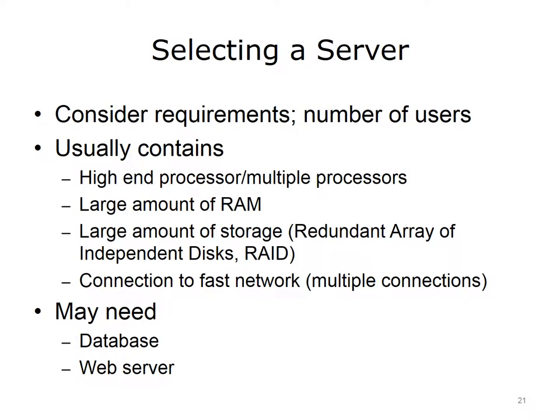When purchasing a server, you again need to consider what you need it to do. Some systems have a maximum number of users, so additional servers may need to be purchased. A server usually contains the highest-end multi-core processor. It also contains a large amount of RAM, which ensures that many programs and processes can be run simultaneously. It also needs a large amount of storage, which is usually implemented as a RAID, or redundant array of independent disks. This is a way to ensure data is not lost in case of disk failure. Also, the server needs connections to a fast network with multiple instances of these connections. Depending on your applications, you may also need to install a database and/or web server.